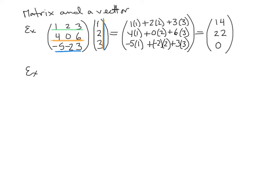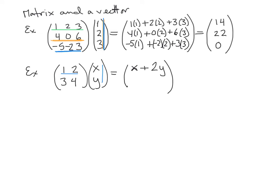Let's do another example: [1 2 / 3 4] times [x / y]. Top row: 1×x + 2×y = x + 2y. Bottom row: 3×x + 4×y = 3x + 4y. We can't simplify further since x and y are different variables. This is the multiplication we'll be doing quite a bit of when we look at the differential equations.